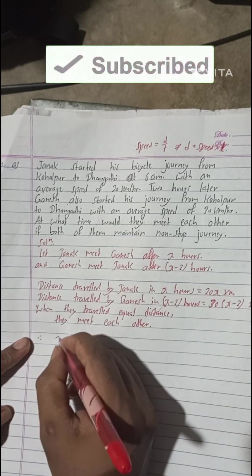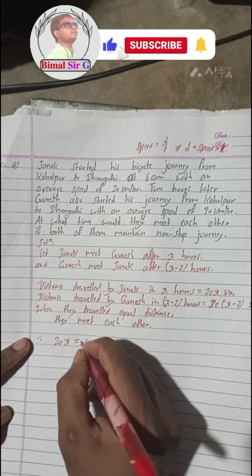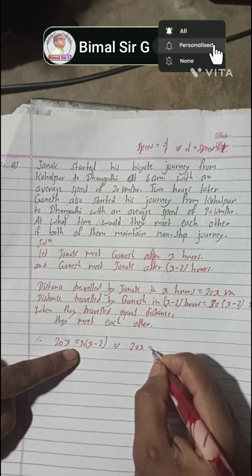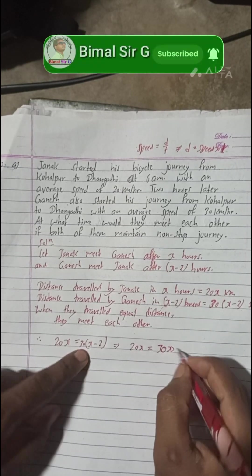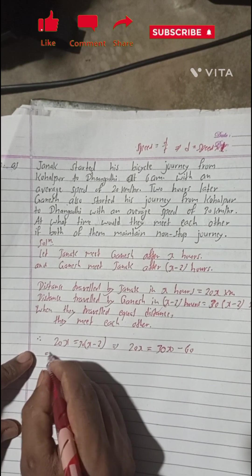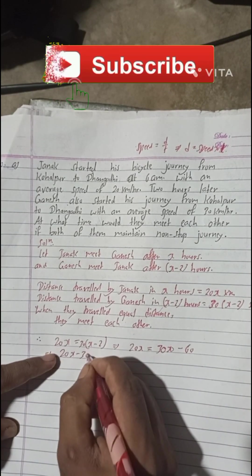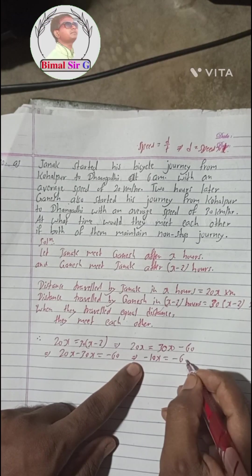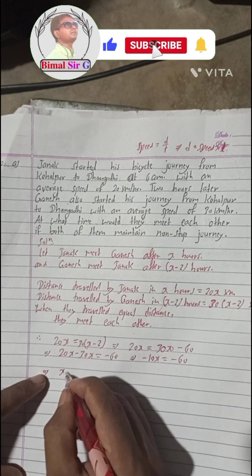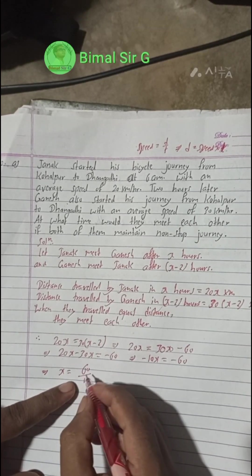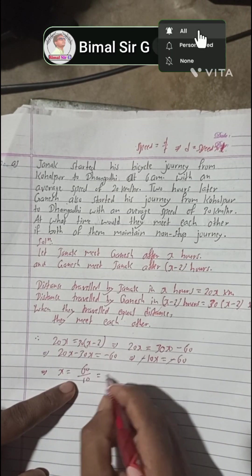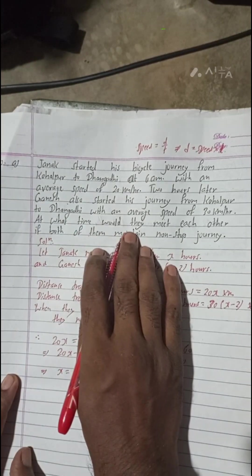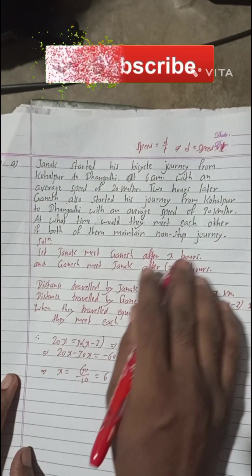Therefore we write: 20x equals 30(x minus 2). Solving this: 20x equals 30x minus 60, which implies minus 10x equals minus 60. The negatives cancel, giving x equals 60 divided by 10, so x equals 6. We got x equals 6 hours.